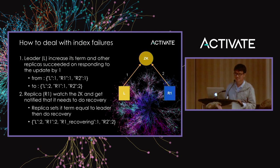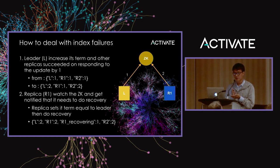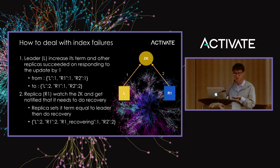Question: what happens if recovery fails? If the leader fails to send an update to any replica including the recovering one, it will increase its term by 1 again. So the leader and R2 increase from 2 to 3, and R1 stays at term 2. This new design is quite powerful and helps solve other problems beyond the index failure case I mentioned.